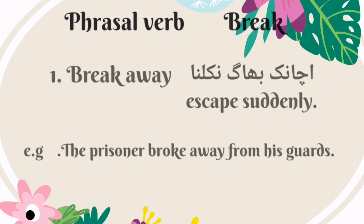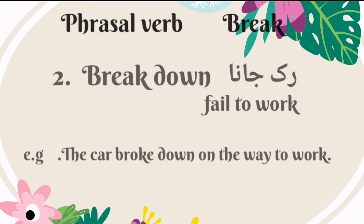Now the phrasal verb 'break.' The first phrasal verb of break is 'break away.' Its meaning is escape suddenly — Urdu mein is ka matlab hai achanak bhaag nakalna. The example would be: the prisoner broke away from his guards. The second phrasal verb of break is 'break down.' Its meaning is fail to work — Urdu mein is ka matlab hai ruk jana. For example: the car broke down on the way to work.